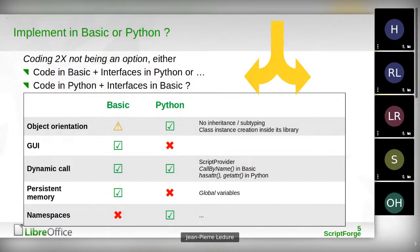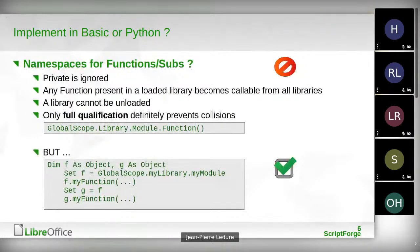Persistent memory is also needed to store error messages in the user's language, to store debugging info, or to keep a list of available services. Basic has a good solution with global variables that last as long as the LibreOffice session. Python had a lag there in using that kind of thing easily. We also needed namespaces because when making an API with a huge number of functions, we must segment the names — and Basic is very bad in that matter. In the first step we were quite embarrassed and could not make the choice.